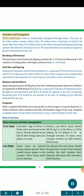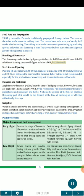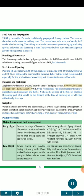Seed Rate and Propagation: 25–35 q tubers per hectare. Potato is traditionally propagated through tubers; the eyes on the tuber surface contain axillary buds. Tubers have a dormancy of nearly 8 to 10 weeks after harvesting. The sprouted tubers put up fast and vigorous growth when planted in the soil. Breaking of Dormancy: This dormancy can be broken by dipping cut tubers for 1 to 1.5 hours in thiourea at 1 to 2% solution, or treating tubers with 5 ppm solution of GA₃ for 10 seconds. Seed Size and Spacing: Planting 40 to 50 g tuber with 40 to 50 mm diameter at a spacing of 45 to 60 cm between rows and 20–25 cm between tubers within the rows. Tuber cutting is not recommended especially for seed crop production as it transmits viruses and bacteria. Manures and Fertilizer: Apply FYM at 100 q/ha at time of field preparation. Fertilizers are applied at 120 kg N, 80 kg P₂O₅ and 60 kg K₂O per hectare. Full dose of FYM, phosphorus, potassium and half of N should be applied at the time of planting; remaining N should be top-dressed at the time of earthing up.